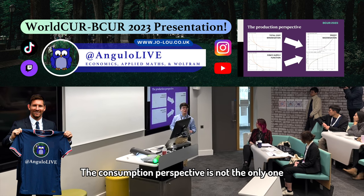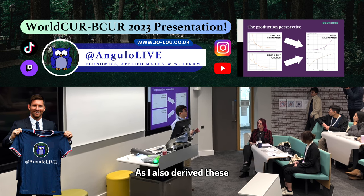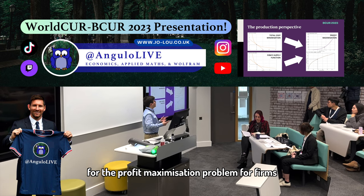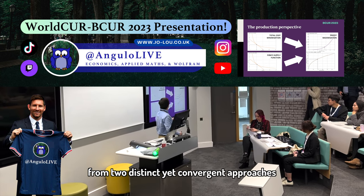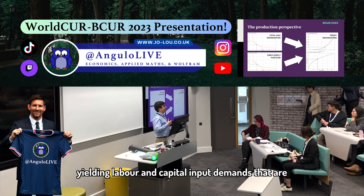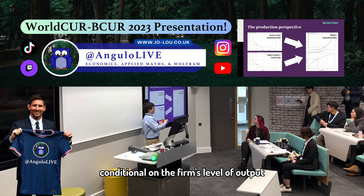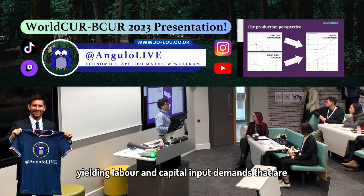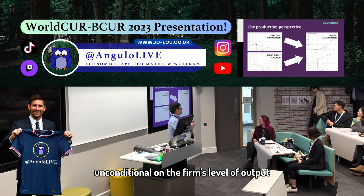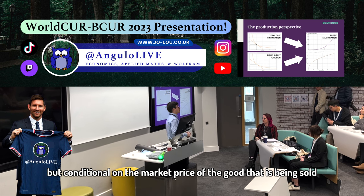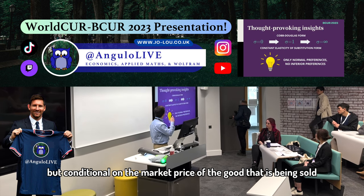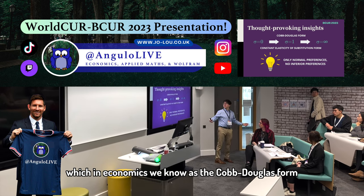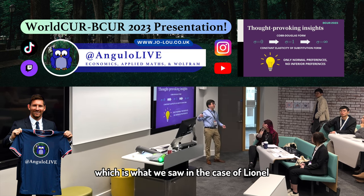The consumption perspective is not the only one that I analysed in my research project, as I also derived these generalised constrained optimisation solutions for the profit maximisation problem for firms from two distinct yet convergent approaches. On the one hand, we have total cost minimisation, yielding labour and capital input demands that are conditional on the firm's level of output, and on the other hand, we have the firm's optimal supply function, yielding labour and capital input demands that are unconditional on the firm's level of output but conditional on the market price of the good being sold. Initially, my research only comprised the unitary case of the elasticity of substitution, which in economics we know as the Cobb-Douglas form, which is what we saw in the case of Lionel.